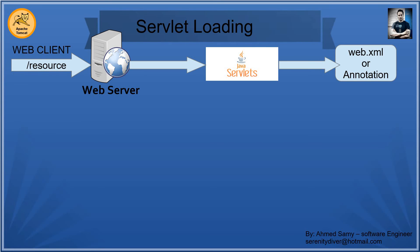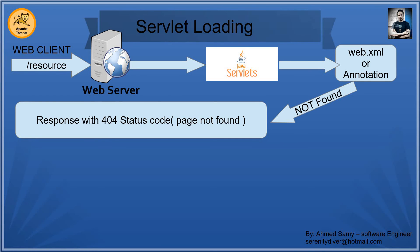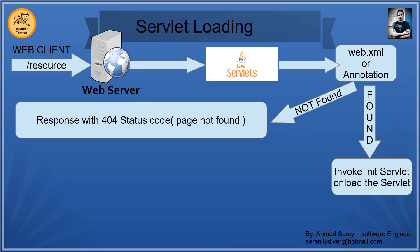This is where the web.xml file or annotation processing comes in. When the resource goes into a specific application, the application extracts the resource name and sends it to the web.xml file. The web.xml file checks the resource name and compares it against the list of Java servlets. If it is found, it returns the resource. If it is not found, it sends a 404 page not found exception, so you need to check your resources again. If the resource is matched inside web.xml or the annotation, we call that class and invoke the init servlet - the first lifecycle method of the servlet.